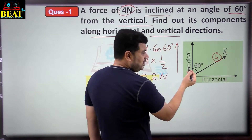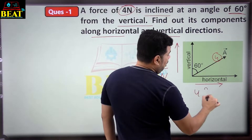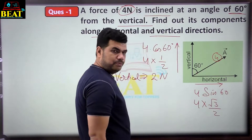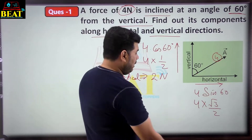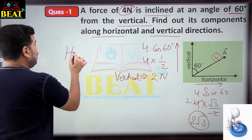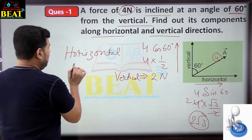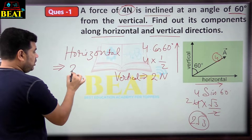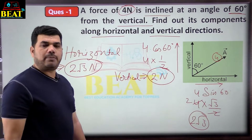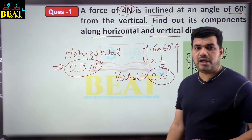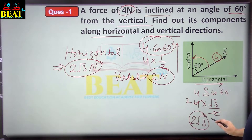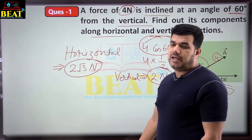For the horizontal component, the side where the angle is not given, sine applies. So horizontal component = 4 sin 60. The value of sin 60 is root 3 by 2. So 4 × root 3/2 = 2 root 3 Newton. The horizontal component is 2 root 3 Newton. Remember: where the angle is given, cos applies; where it is not, sine applies.